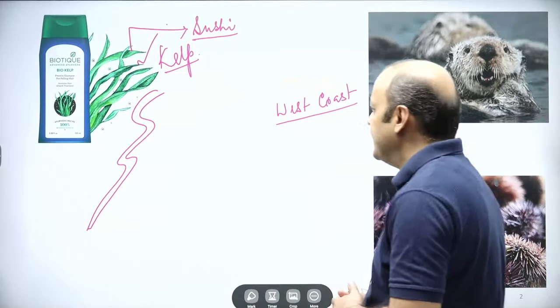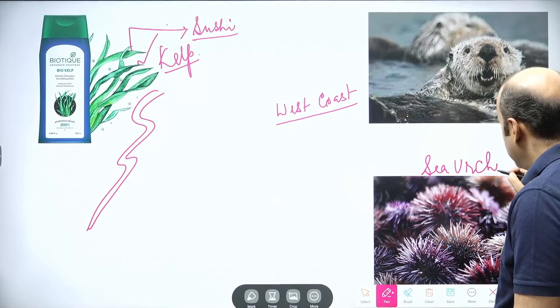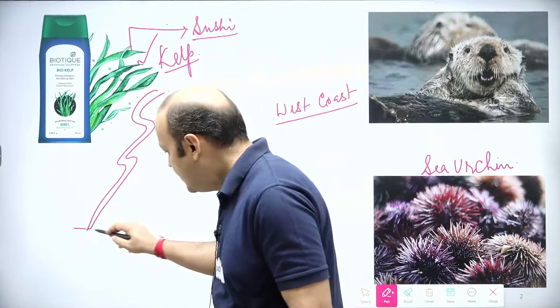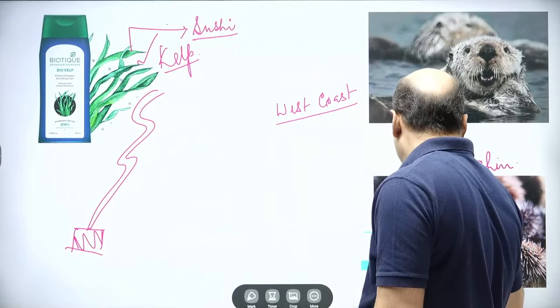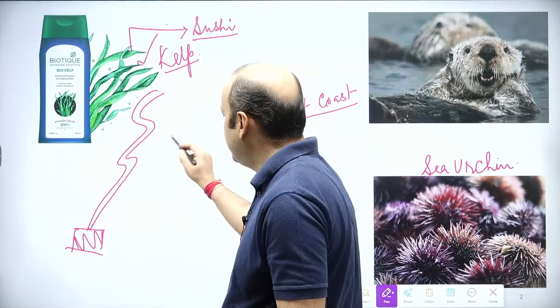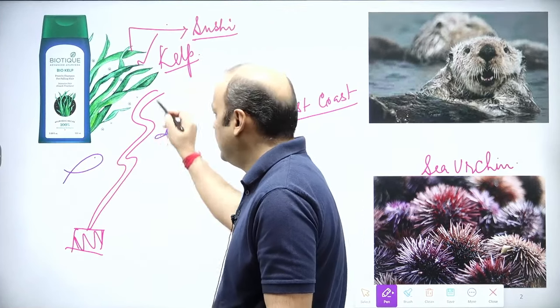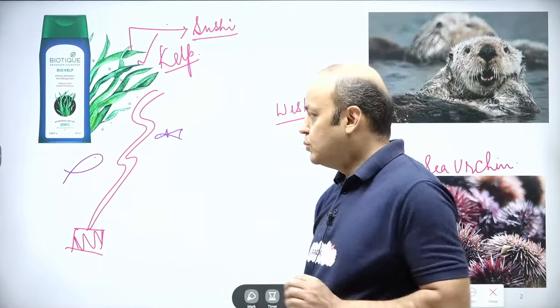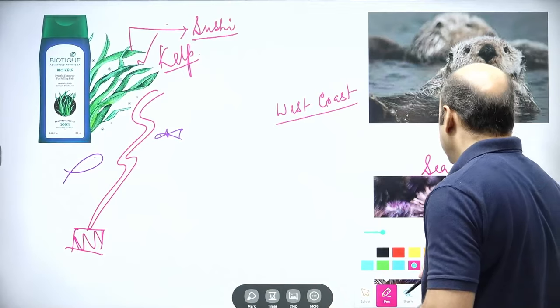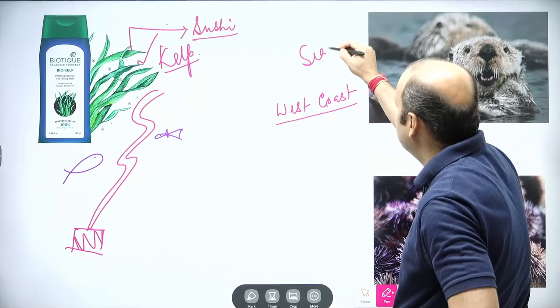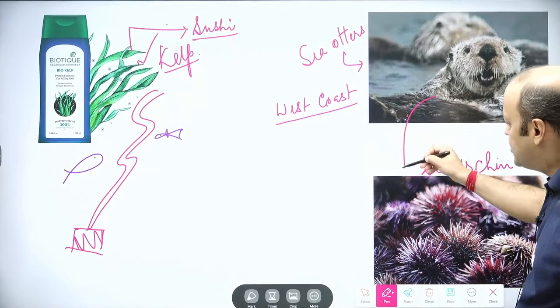So what happened here is that there is an aquatic organism which is known as sea urchin. So if the kelp is destroyed, all the other organisms which are dependent upon this particular kelp will also be destroyed. So the entire aquatic ecosystem will start to suffer. So for this, there is another organism which is known as sea otters. So sea otters keep the population of sea urchin in check.